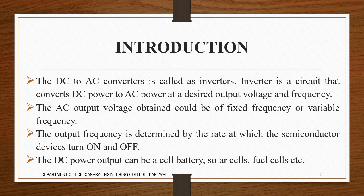When power supply is available, the circuit is in an idle state. When the power supply from the electricity board is gone, this circuit initiates and converts the DC stored in the battery back to AC — that is the inverter circuit. The AC output voltage obtained could be fixed, variable, or any kind of variable frequency. The output frequency is determined by the rate at which the semiconductor device is turned on and off — that is the duty cycle.